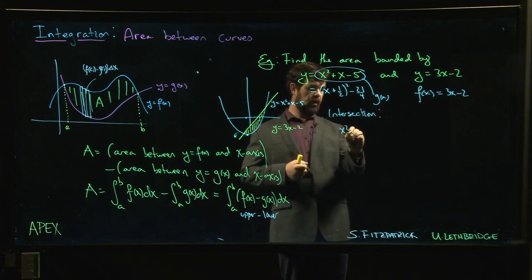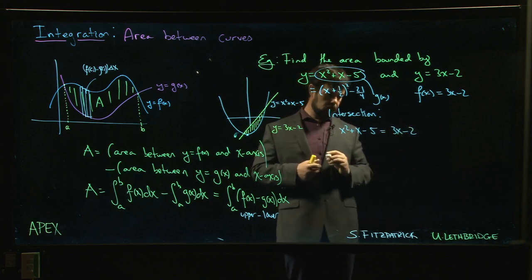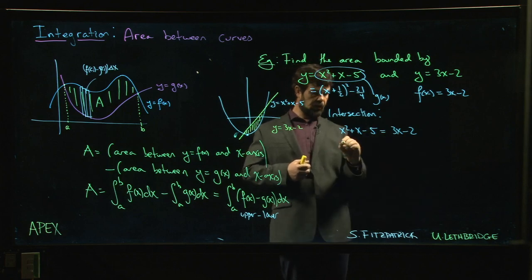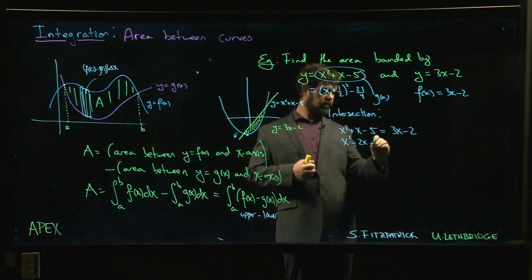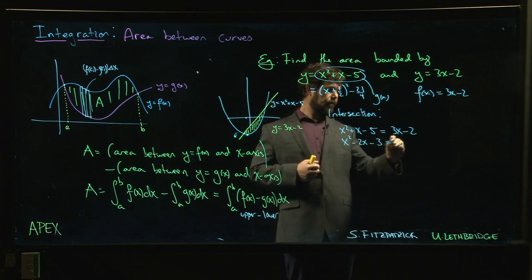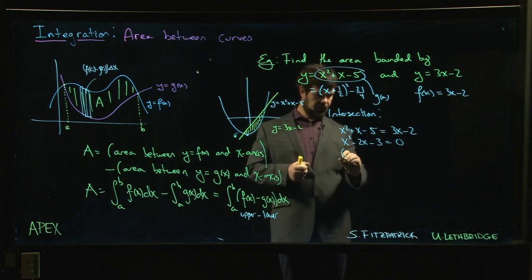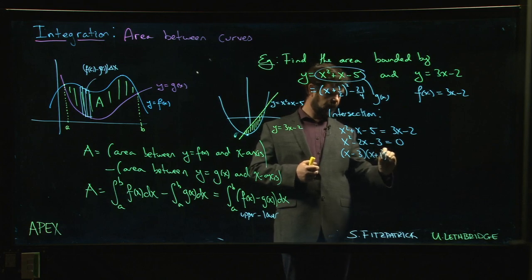For intersections we want x² + x - 5 equal to 3x - 2. We solve this quadratic as usual, bring everything to one side: x² - 2x - 3 = 0. Conveniently enough, this is now something that factors. This is going to give us (x - 3)(x + 1).